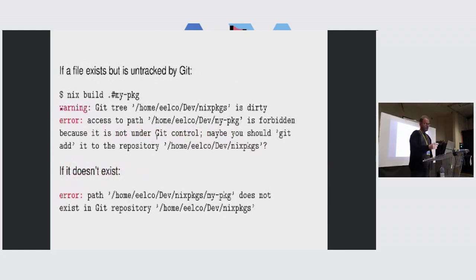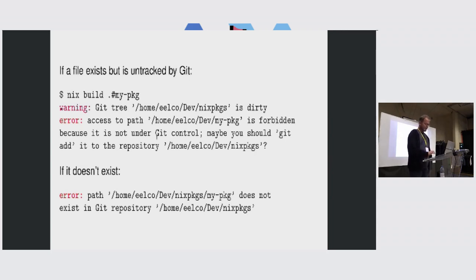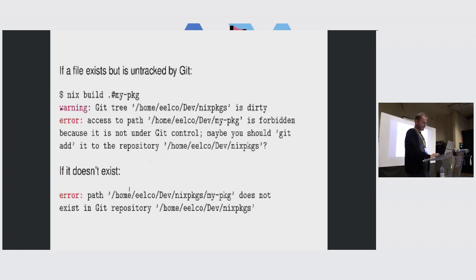Since we now have all this provenance information — so we know where these path references actually came from — we can get better error messages. For example, if I try to do a nix build and I created a file my-package but forgot to git add it, it will actually say: access to path is forbidden because it is not under git control. Maybe you should git add it. Or if it really doesn't exist, it will say: path my-package does not exist in this git repository. Much nicer error messages.